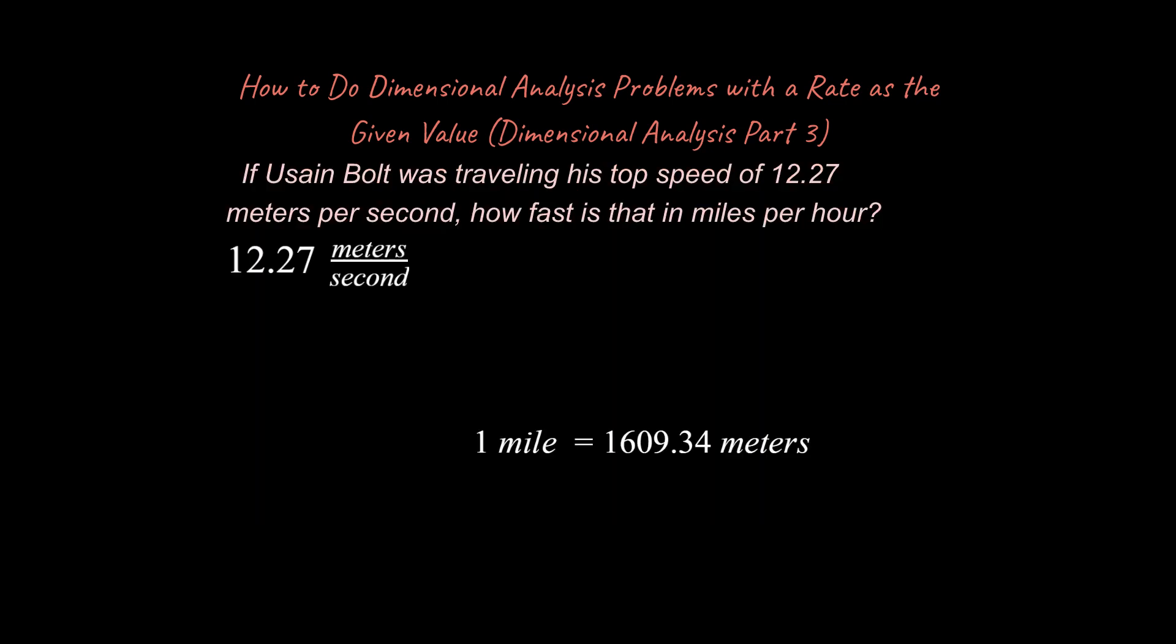The first thing I'm going to do is just write down the given value. In this case, the given value is a rate, so it's 12.27 meters per second. That's okay. You can have a rate be your given value. That's the thing you're going to start with. And then we just need to start doing dimensional analysis. Start multiplying it by fractions that are equal to one, so we don't really change the value, the amount of the given value. In this case, the rate of how fast Usain Bolt is traveling. We just change how that is counted.